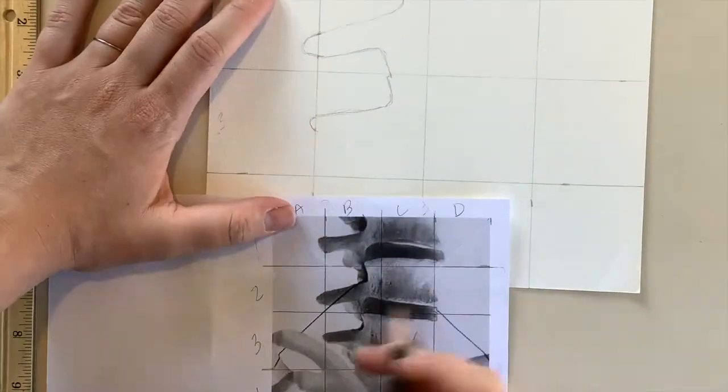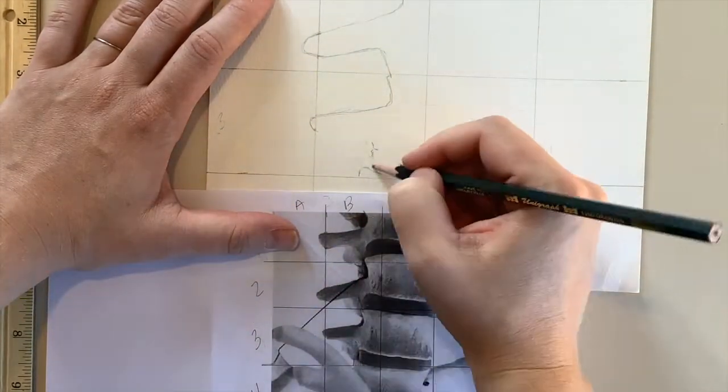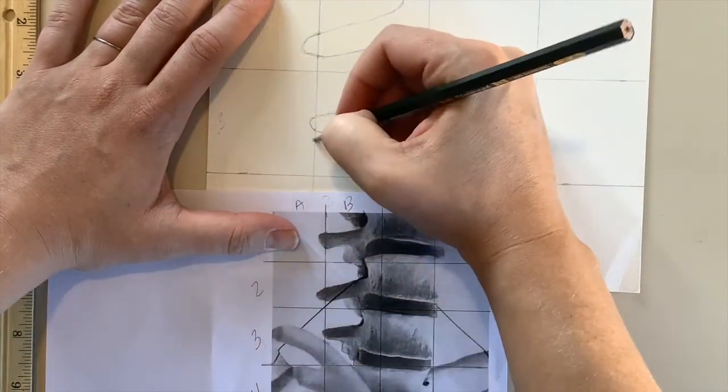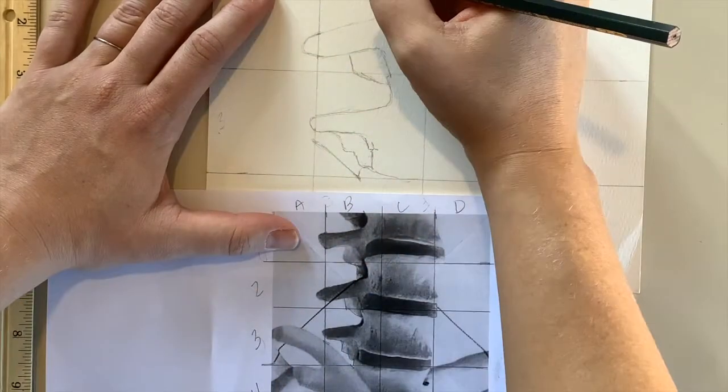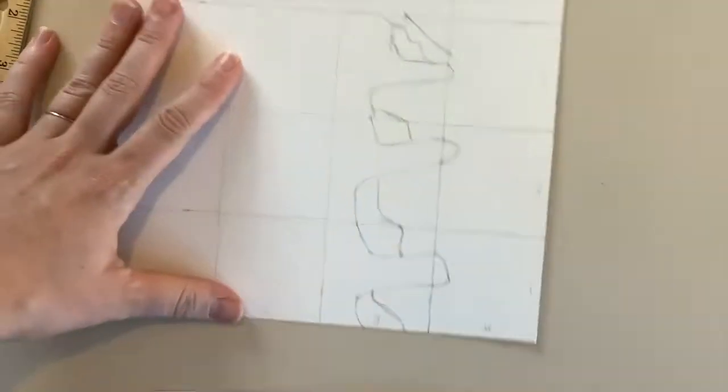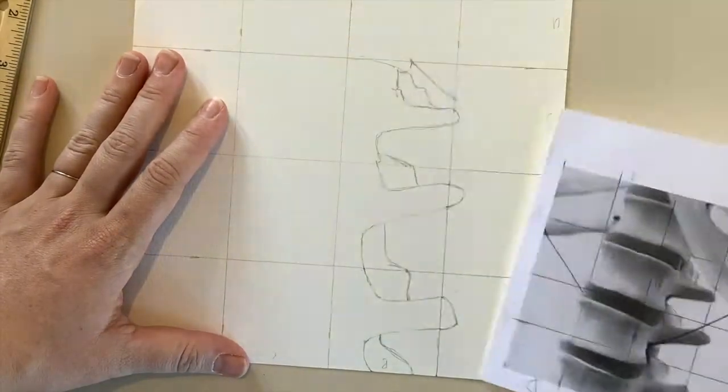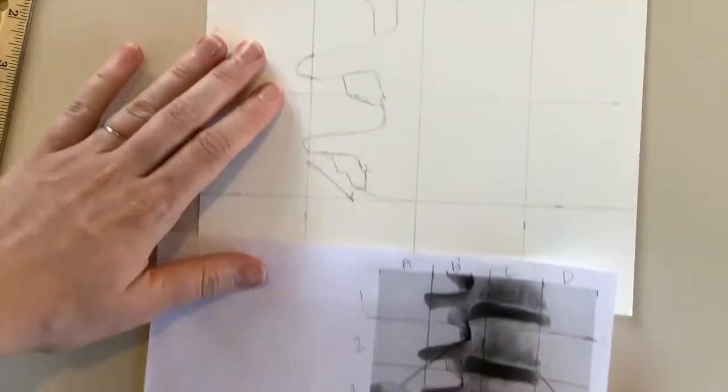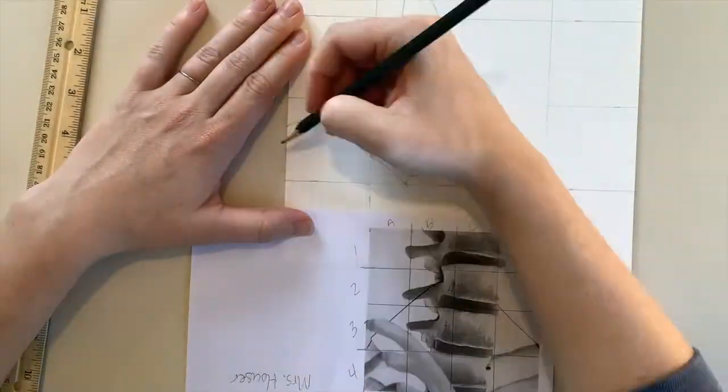Let's speed it up so you can see how this process looks towards the end. You'll notice as I'm working on this I also pause and flip it right side up, that way I can see if I've made any errors or if I'm way off on my grid, or if I just need to fix a couple lines and smooth them out so they look more accurate.